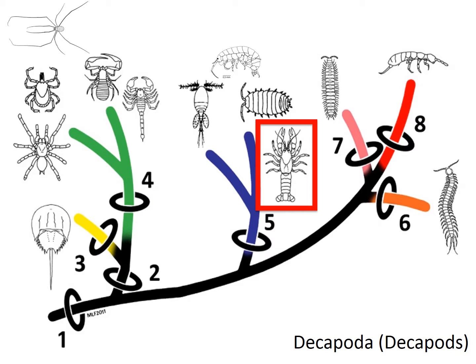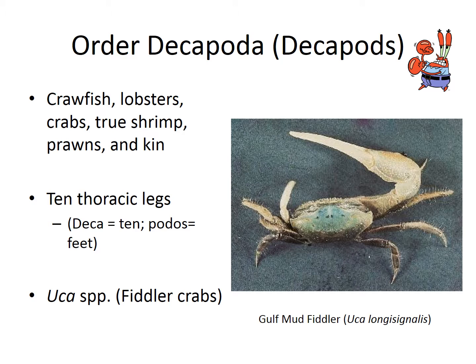The next group is more familiar — when you say crustacean, typically what you think about are decapods, or Decapoda. Decapods are things like crawfish, lobster, crabs, true shrimp, and prawns. The name decapoda comes from deca meaning ten and podos meaning feet, because they have ten thoracic legs on the central part of their body. One example of a truly terrestrial decapod is the fiddler crab, where males have one giant claw used to attract mates or fend off potential competitors.